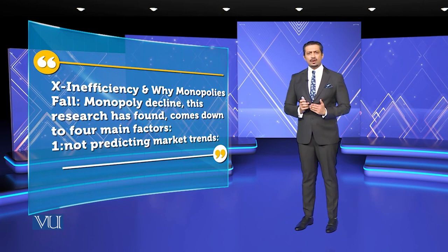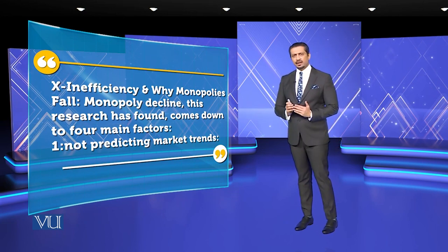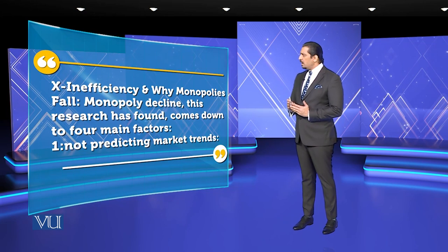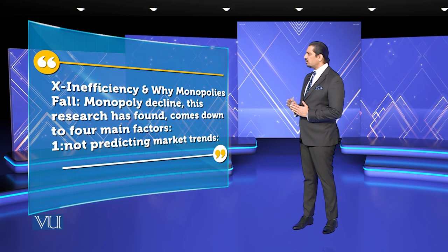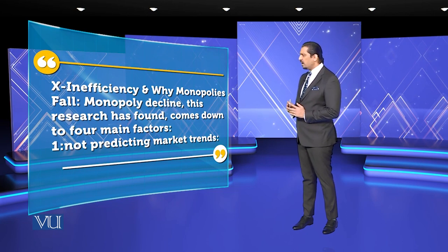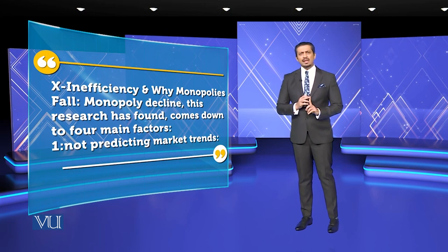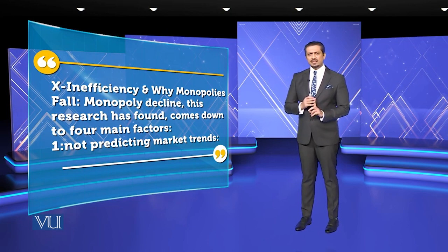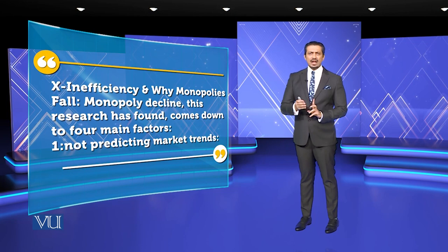Ab agar dekhein ke isko hum X-efficiency ke model ko dekhein ke monopolies mein yeh kaise fall karta hai — it says the monopoly declines. This research has found it comes down to four main factors. One is non-predicting marketing trend. Humne yeh discuss kiya — ek toh predictable hai, yaani forecastable hai, aur ek unforecasted hoti hai, ek unknown market hoti hai.